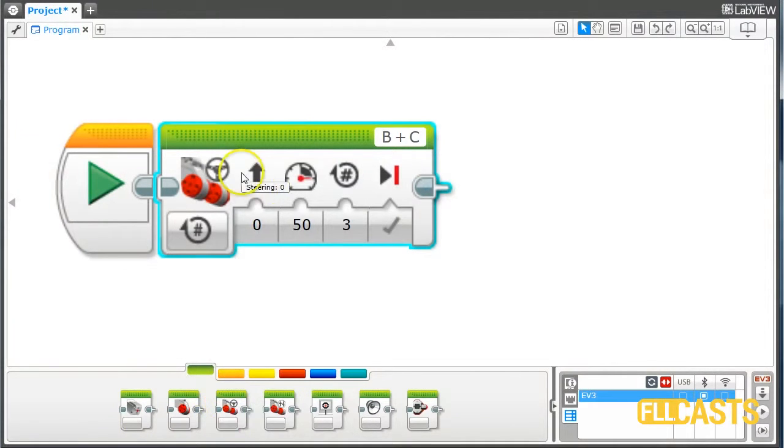The move steering block has an option for steering and it's currently zero. This means that both motors work in sync and they both move forward. Now if I change this value to minus 100, this will mean that one of the motors will move forward, the other backward, and from this our whole robot will move forward. Download and run.